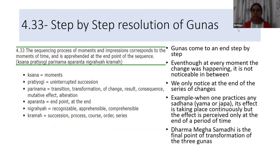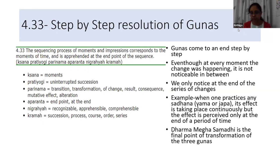The 33rd Sutra says that as the Gunas come to an end, it happens step by step. Even though at every moment the change in the Gunas was happening, it is not noticeable in between. As Sir gave the example: when one practices a Sadhana, a Japa or a Yama practice, the effect is taking place continuously within us but is perceived only after a certain period of time. Like that, the end of the Gunas is observed once we reach Dharma Megha Samadhi — the final point of transformation of the three Gunas.